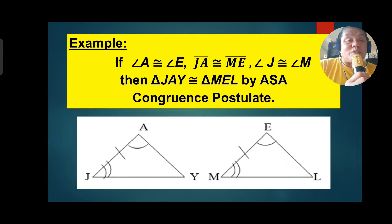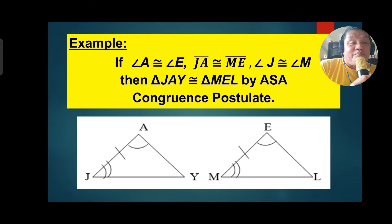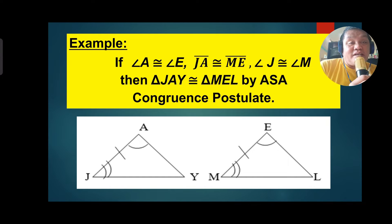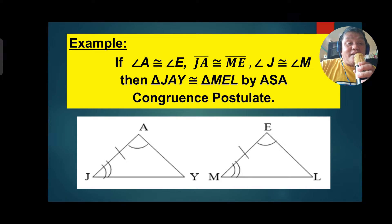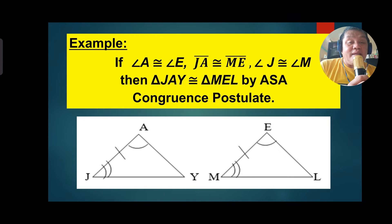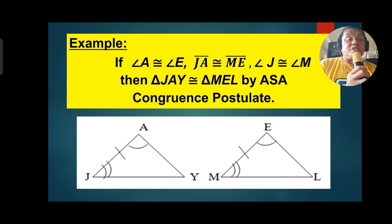So again, from Figure 1 and Figure 2: Angle A is congruent to Angle E. From Triangle 1, Side GA is congruent to Side ME. Also from Triangle 1, Angle J is congruent to Angle M. Comparing Triangle 1 and Triangle 2, Triangle JAY is congruent to Triangle MEL by the Angle Side Angle Congruence Postulate.